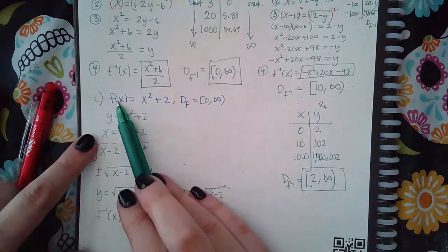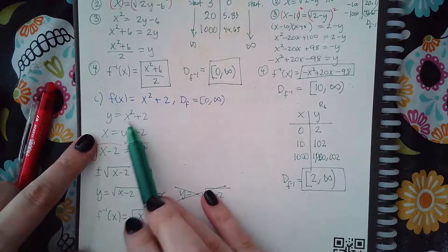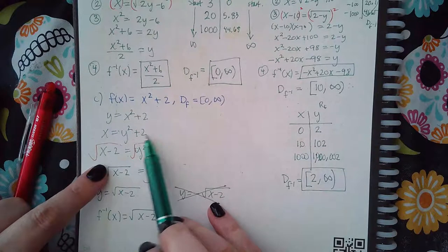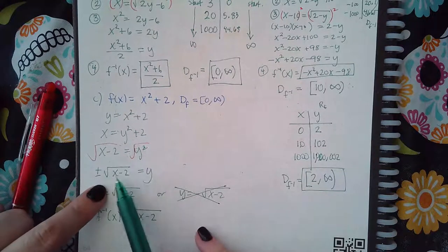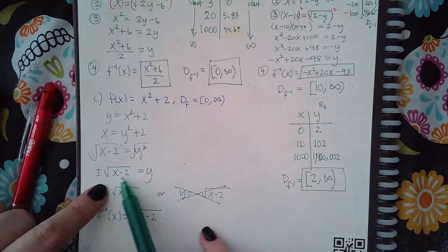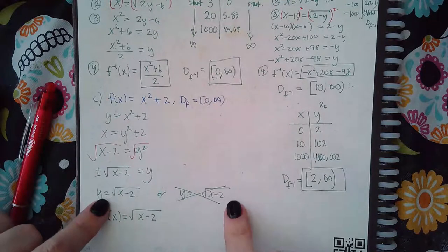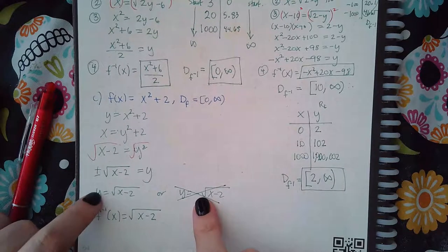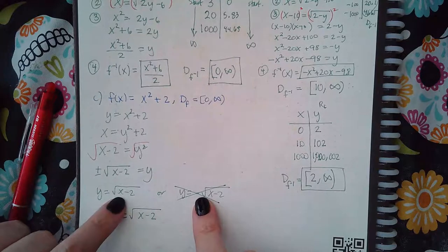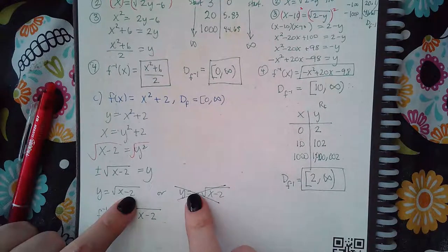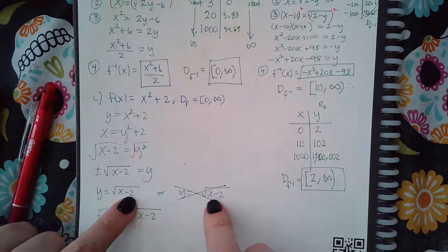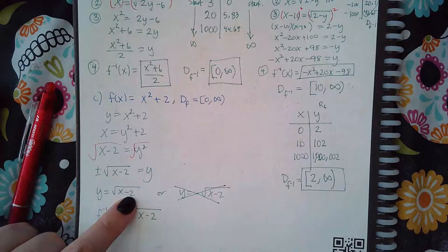So change the f of x to y. Interchange the x and y's. And then start solving for y. So I subtract 2. Then I took the square root of x minus 2. And I got y by itself. So I have two possibilities here. I have y equals the square root of x minus 2. And then y equals the negative square root of x minus 2. So we had two different values here.